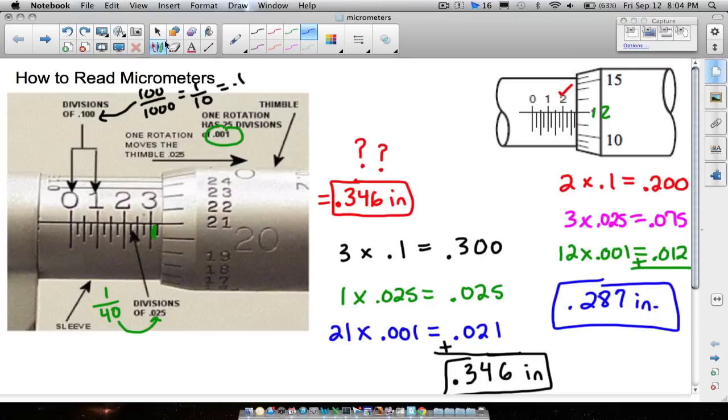From these two examples, the things you want to remember for these micrometers: the first number that you see multiplied by 0.1, the number of empty spaces that you see, granted you have a black line showing up behind it, the number of full spaces you multiply it by 0.025, and then the number that's on the thimble, we multiply that by 0.001, and that's how we get these measurements here.